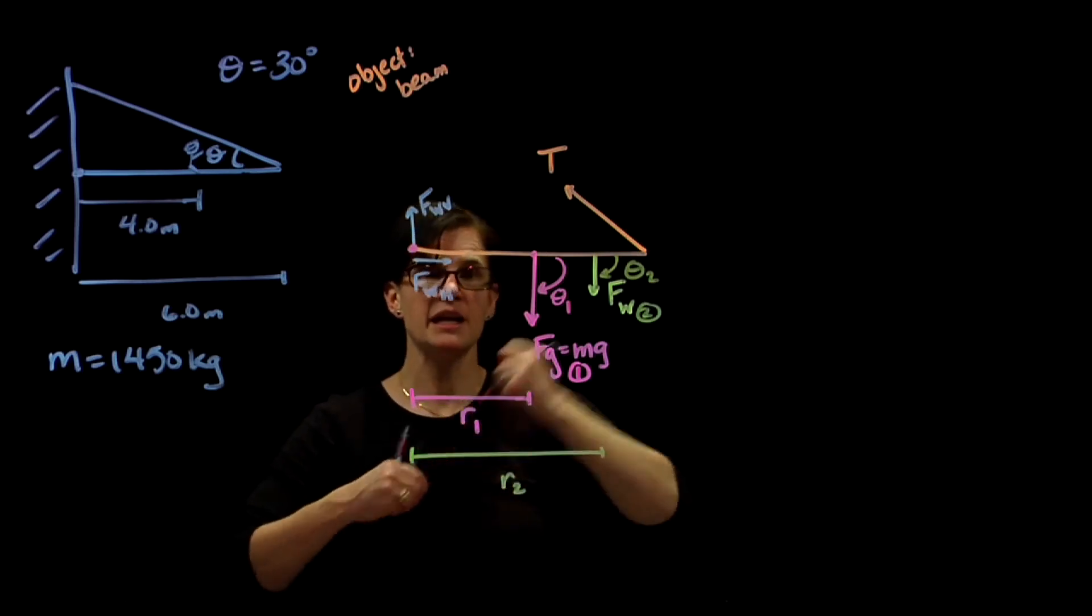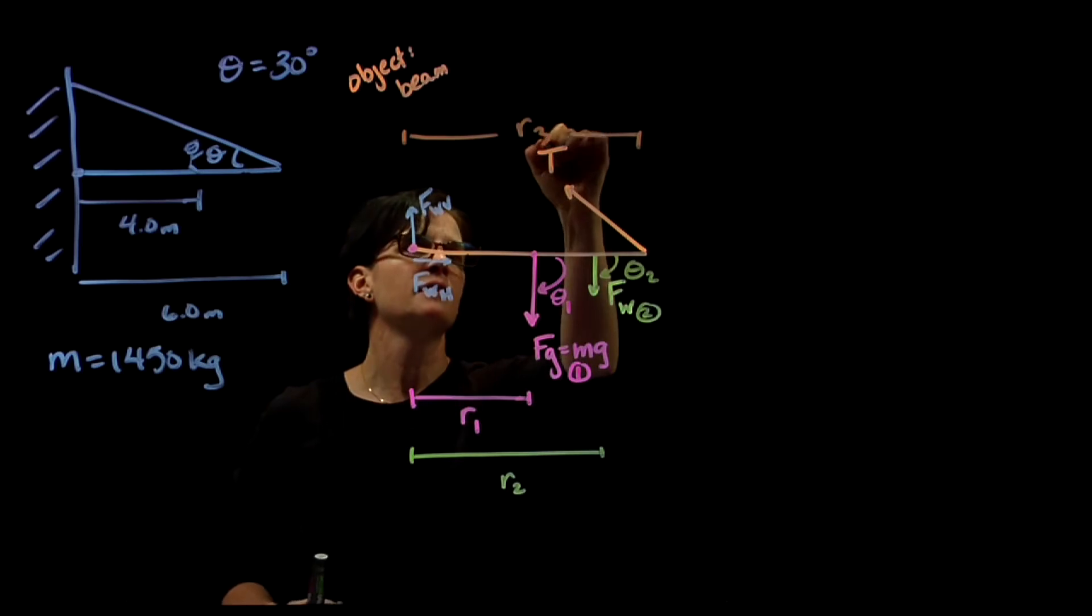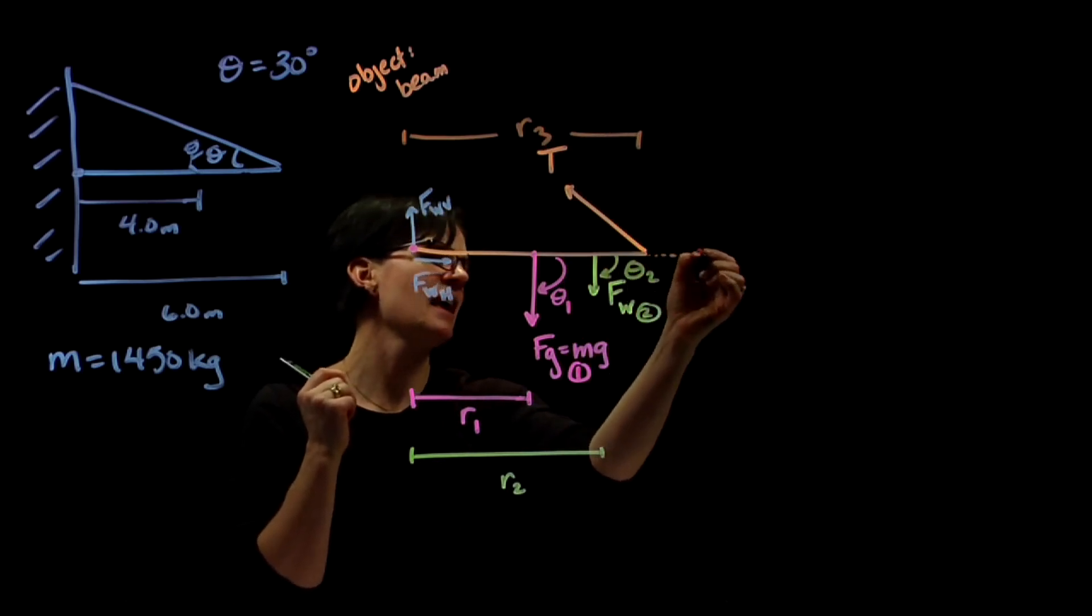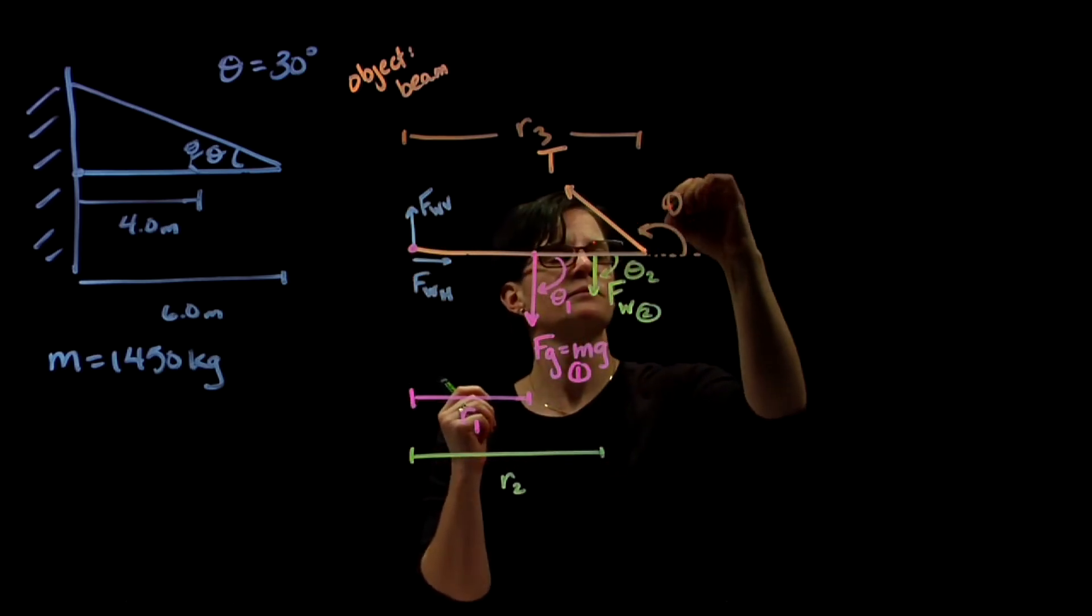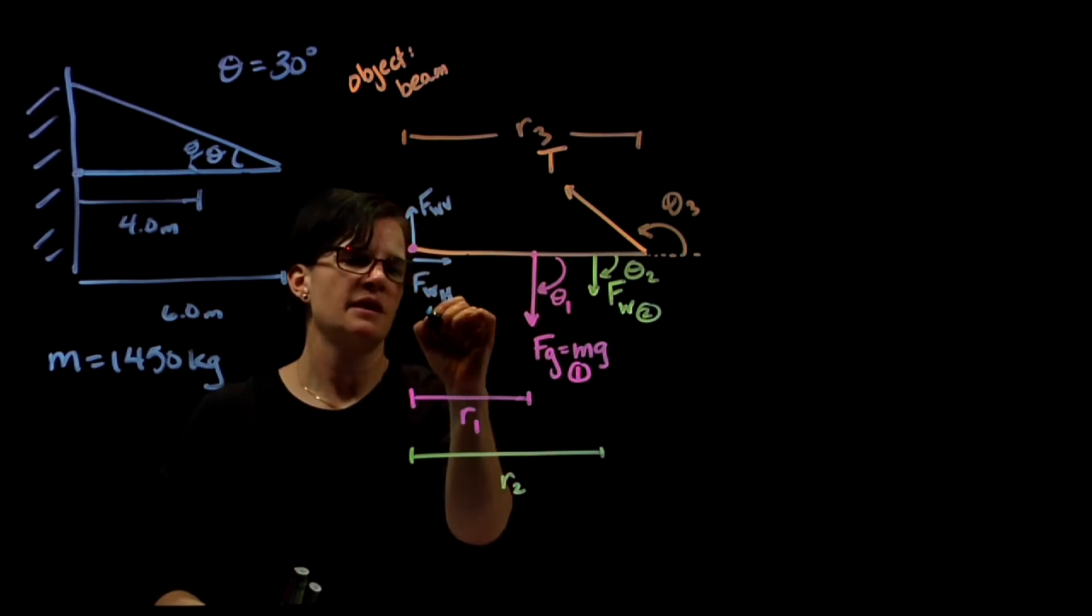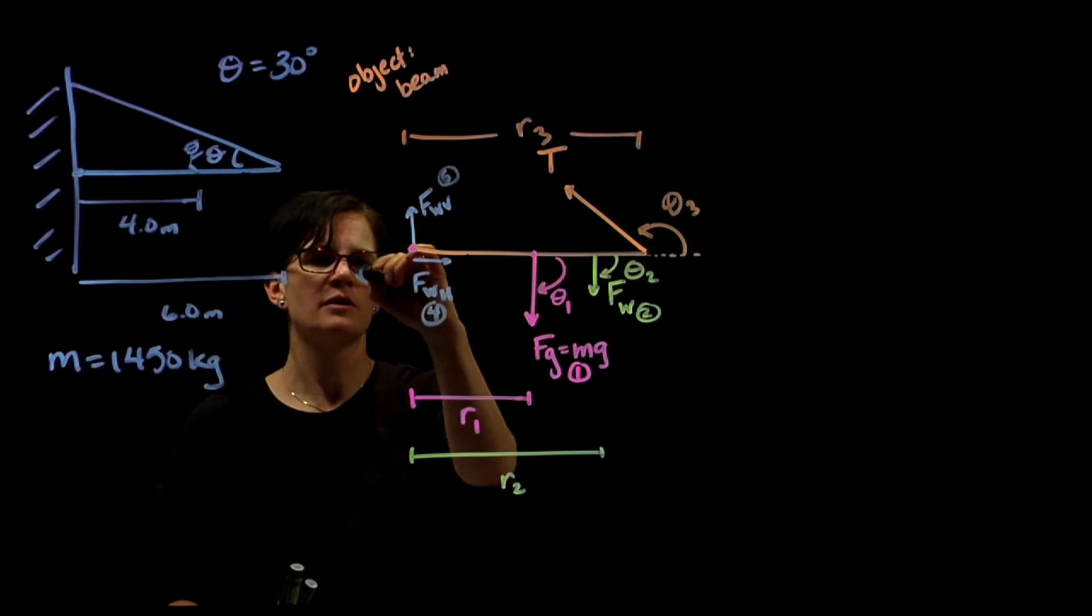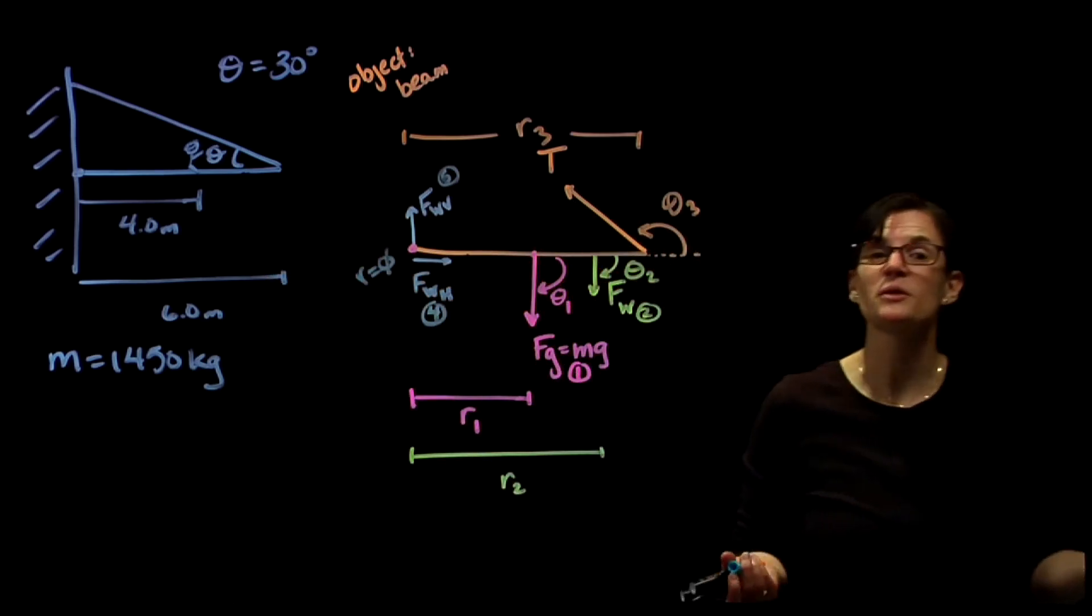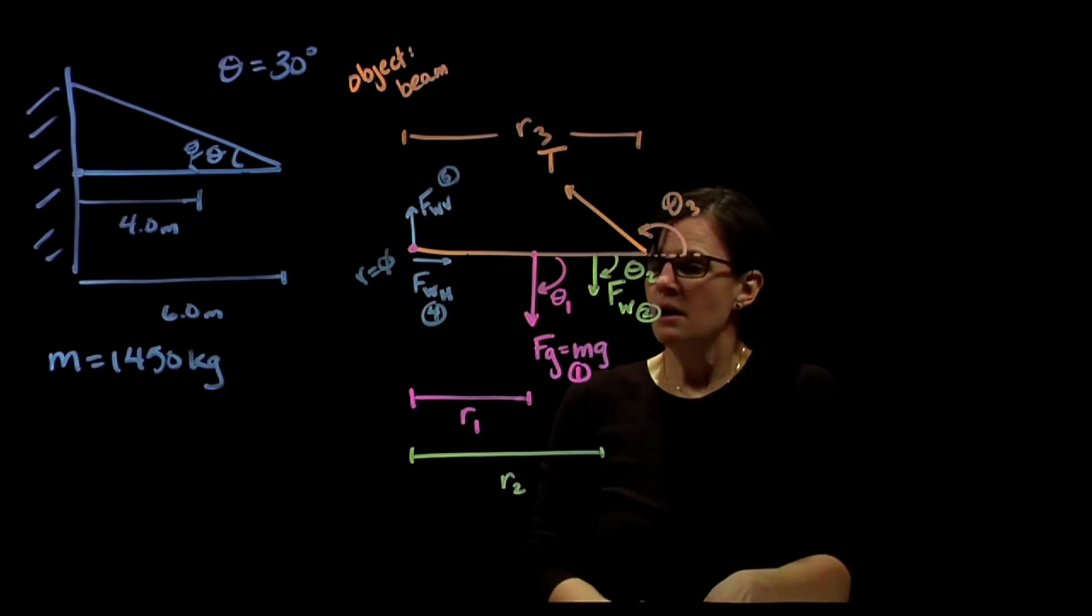Force number three has the full radius, the full length of the beam. We're going to extend that radius, curl to the force. If we consider this force four and force five, we know that radius equals zero and we don't really care about the angle at this point because we know the radius is equal to zero, so the torque will be equal to zero.